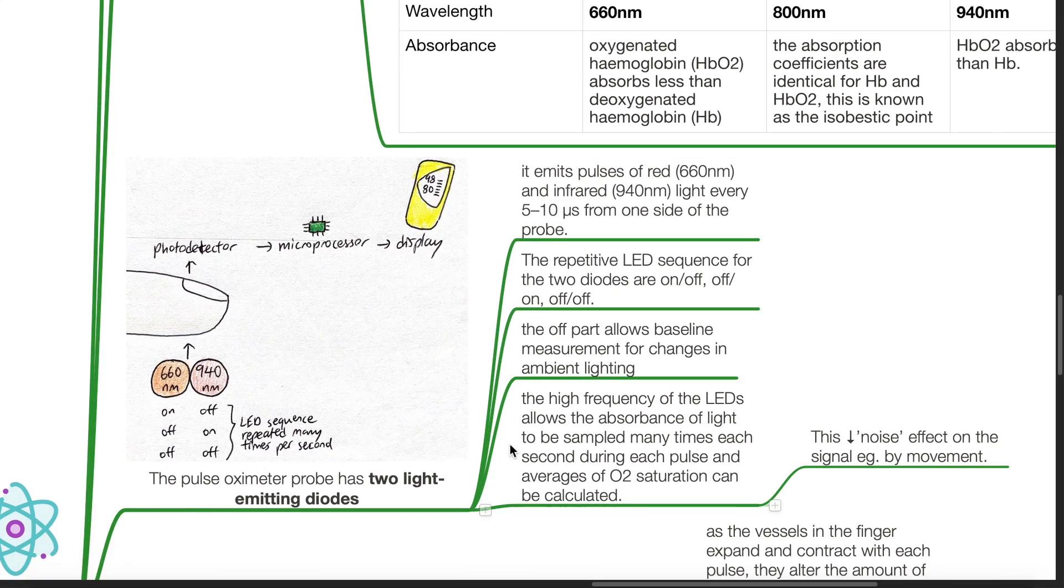The pulse oximeter probe has two light emitting diodes, and it emits pulses of red at 660 nm and infrared at 940 nm light every 5 to 10 microseconds from one side of the probe. The repetitive LED sequence for the two diodes are on-off, off-on, and off-off. The off-off part allows baseline measurement for changes in ambient lighting.